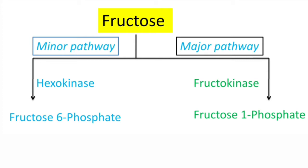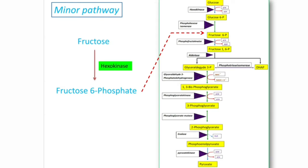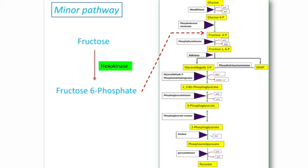The minor pathway is catalyzed by hexokinase, where fructose is converted into fructose-6-phosphate. This is called the minor pathway because hexokinase converts fructose to fructose-6-phosphate only when the concentration of fructose is very high. That means the affinity of hexokinase for fructose is very less, so only few molecules of fructose are converted to fructose-6-phosphate. Fructose-6-phosphate is one of the intermediates of glycolysis and is metabolized further by reactions of glycolysis.